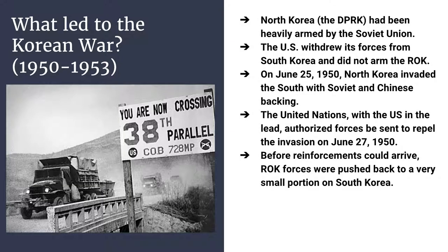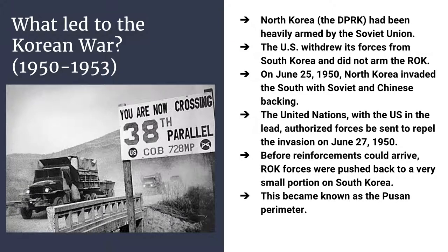Unfortunately for the South Koreans, before US reinforcements could arrive, the Republic of Korea forces — which were not very well equipped — were pushed back to a very small portion of South Korea on the very southern coast of the peninsula. They were almost defeated before reinforcements could arrive. That area was called the Pusan Perimeter. The North Koreans were extremely effective and in a very short space of time, the South Koreans were back on their heels.